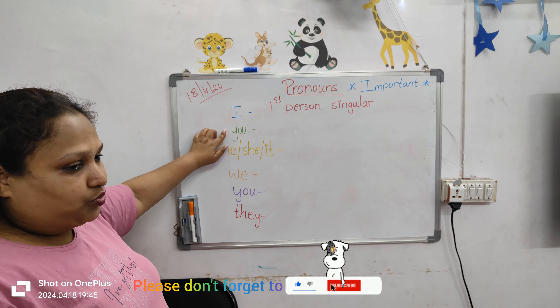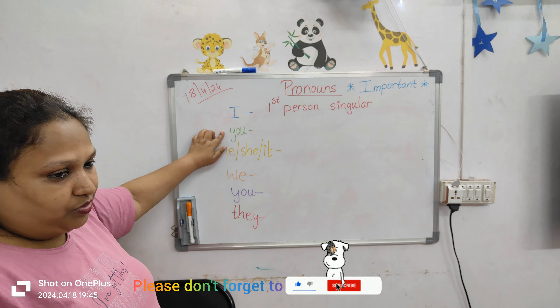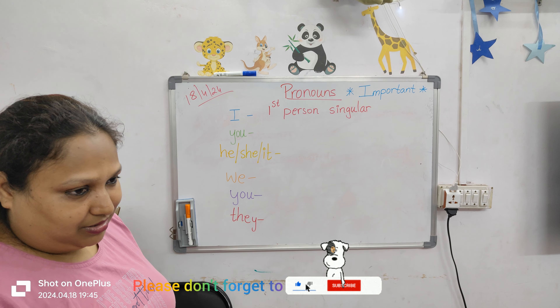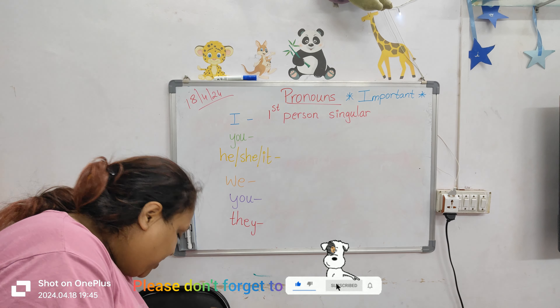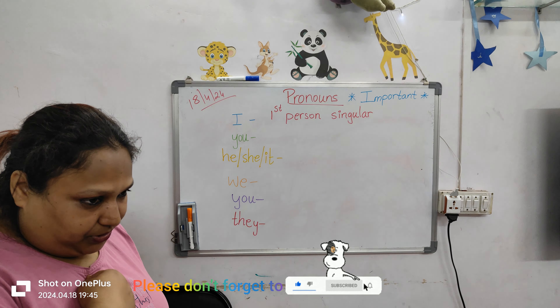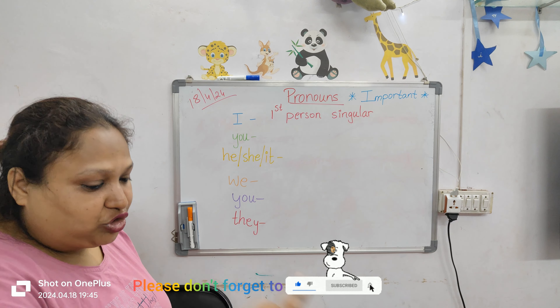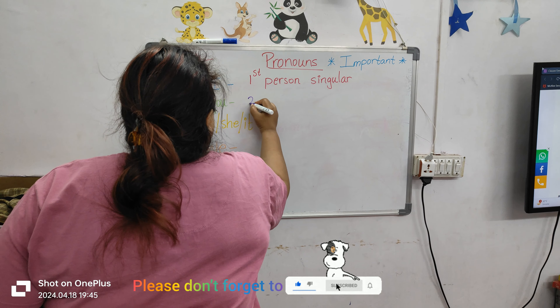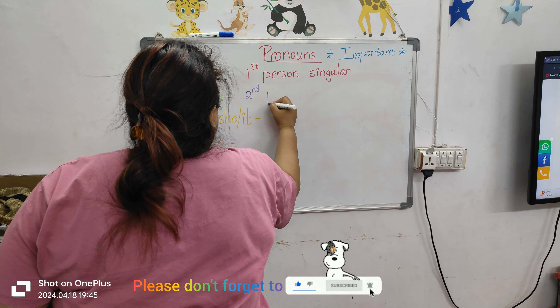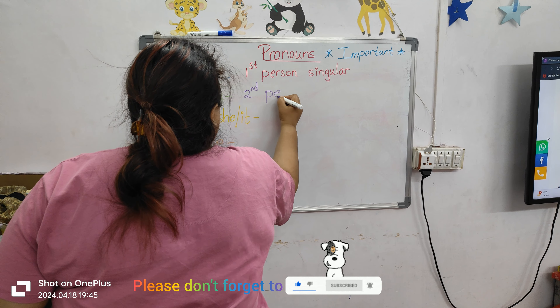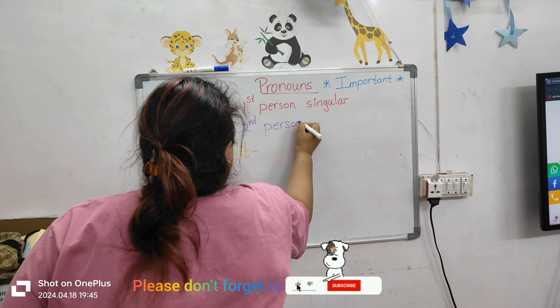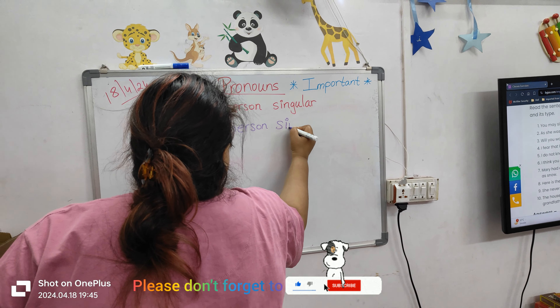Then we have 'you'. For example, I am talking to Hirshita. So we are two people involved. I am the first person, she is the second person. So 'you' will be second person singular.